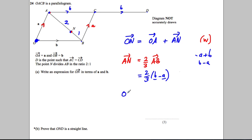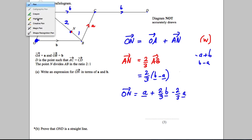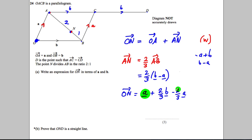Going back to our original working: O to N equals O to A plus A to N. O to A is equal to a, and then we go two thirds of (b subtract a), which we can expand: two thirds b subtract two thirds a. Now we have a subtract two thirds a, leaving one third a, plus two thirds b. So O to N equals one third a plus two thirds b.